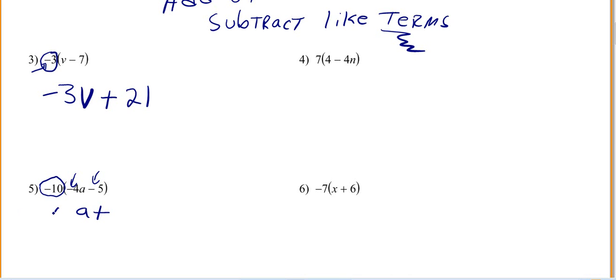10 times 4 is 40. So I've got 40a. 10 times 5 is 50, right? So negative 10 times negative 4 is a positive 40. Negative 10 times a negative 5 is a positive 50.